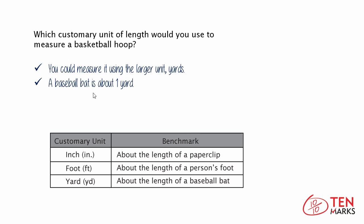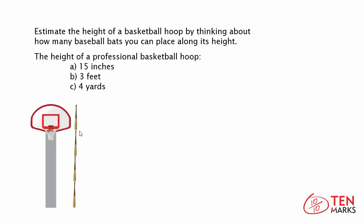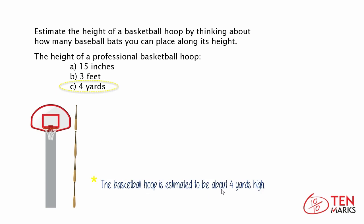A baseball bat is about 1 yard. So now estimate the height of a basketball hoop by thinking about how many baseball bats you can place along its height. The height of a professional basketball hoop is either a) 15 inches, b) 3 feet, or c) 4 yards. As you can see in this image, you can place about 4 baseball bats along the height of the basketball hoop. So the basketball hoop is estimated to be about 4 yards high, or c.